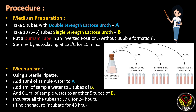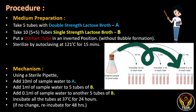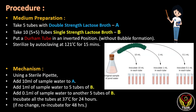Once sterilized, the media should be cooled to room temperature. Using sterile pipettes, 10 ml of the diluted water sample is added to the first set of tubes containing double strength lactose broth, 1 ml is added to the second set containing single strength lactose broth, and 0.1 ml is added to the third set containing single strength lactose broth. All the tubes are then incubated at 37°C for 24 hours.